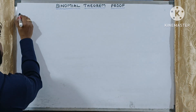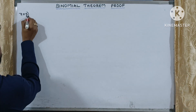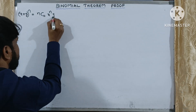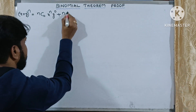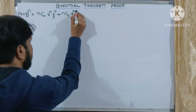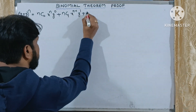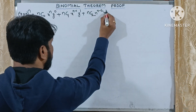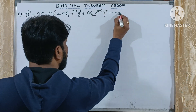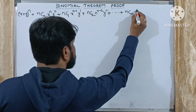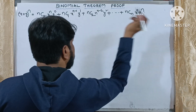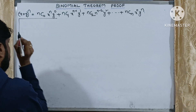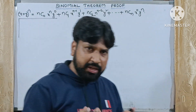The statement of the Binomial Theorem is: (x + y)^n = nC0 · x^n · y^0 + nC1 · x^(n−1) · y^1 + nC2 · x^(n−2) · y^2 + ... + nCn · x^0 · y^n. This is our statement, and we are going to prove it using mathematical induction.